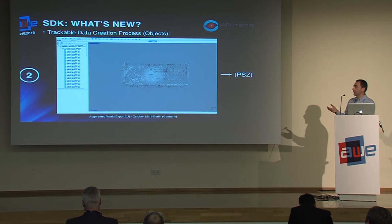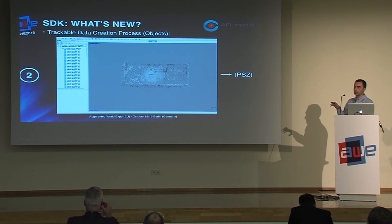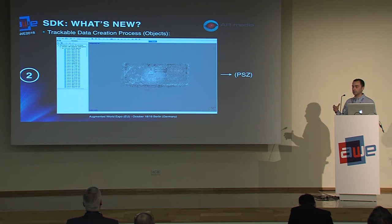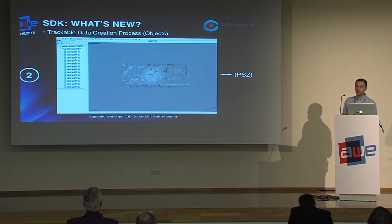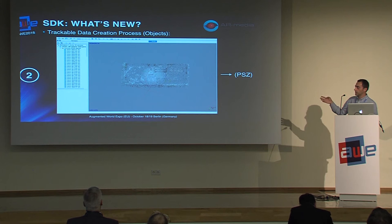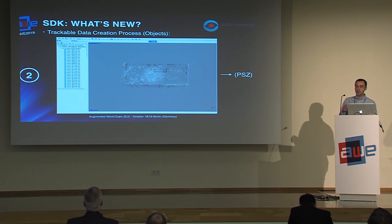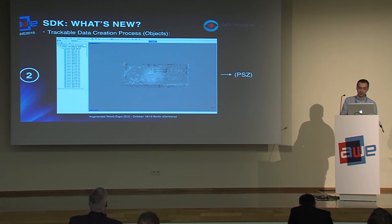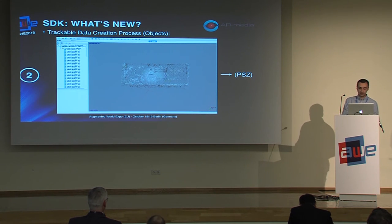You upload the pictures taken with the toolset application and get a point cloud from them. You can remove points you don't want in the tracking data — for example, if you photograph a building, you can remove the surroundings. When the tracking engine uses that data, it will recognize the object and not the environment, meaning you can create tracking data in one place and use it in another.